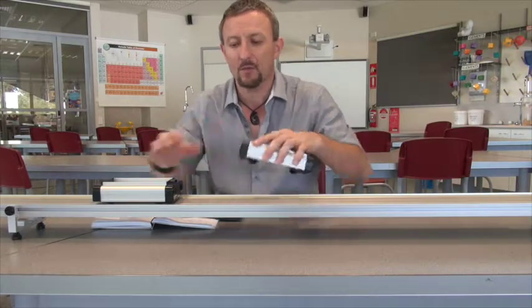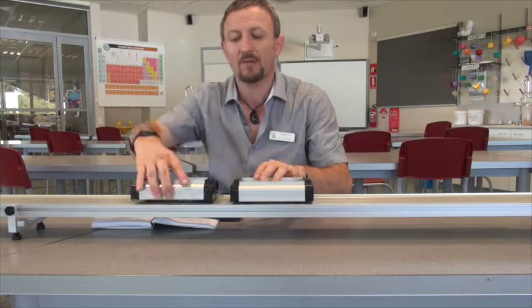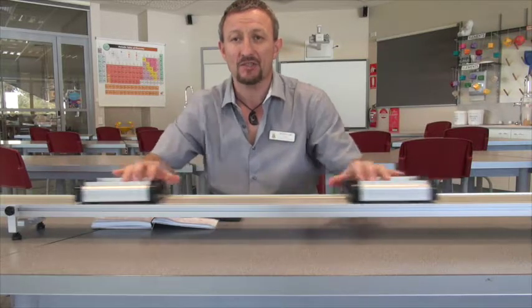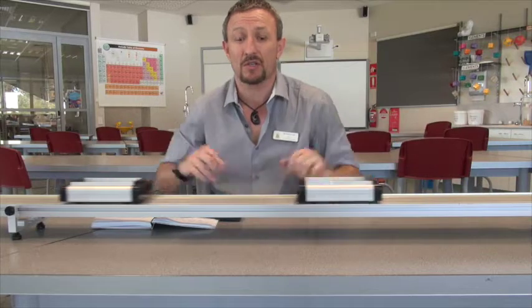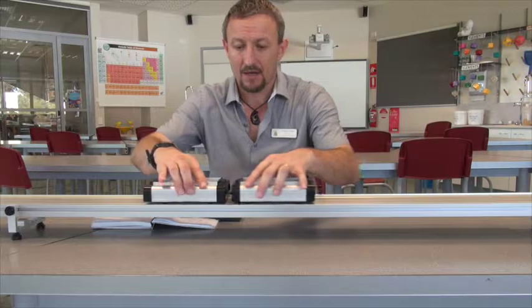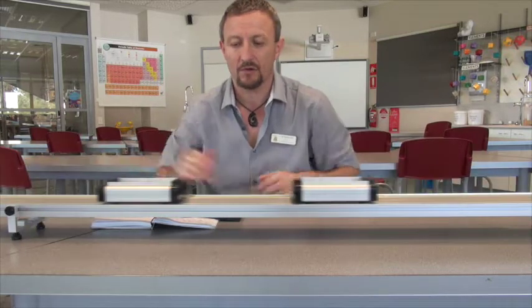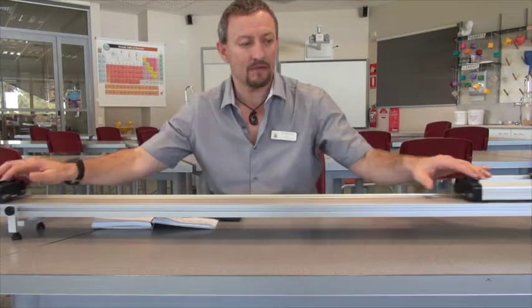Now the final thing I'm going to show you is what happens when we get two objects coming together. Now obviously we're on a track here, so they can only go in one dimension. So what I'm going to do is get the two carts to combine. And what we see is we get rebounding of the carts. Now remember there's a magnet in here which repels, so you can see that they bounce off with the same amount of energy. One more time.